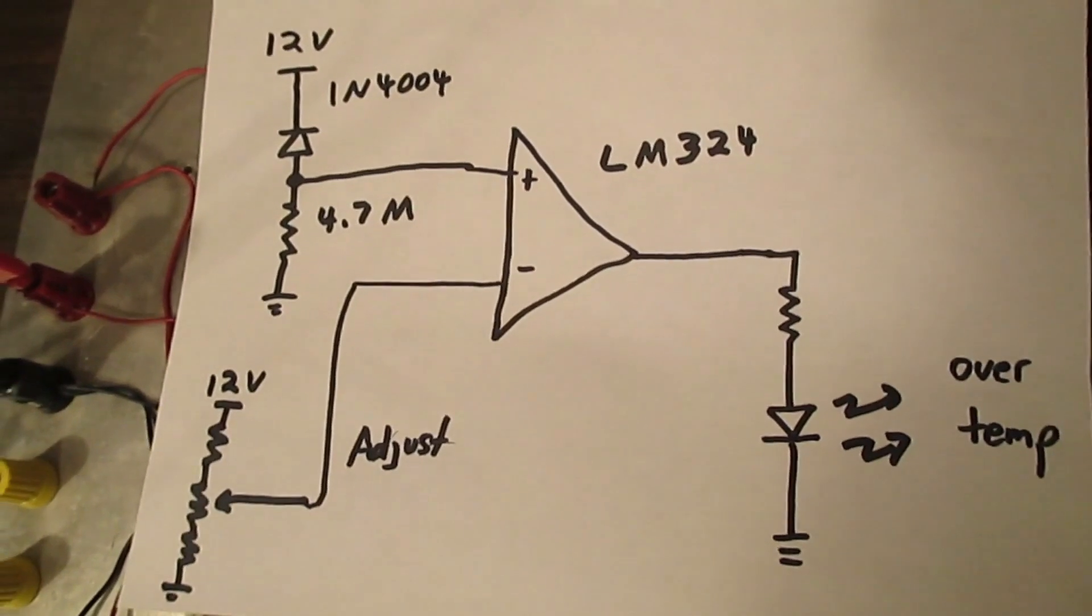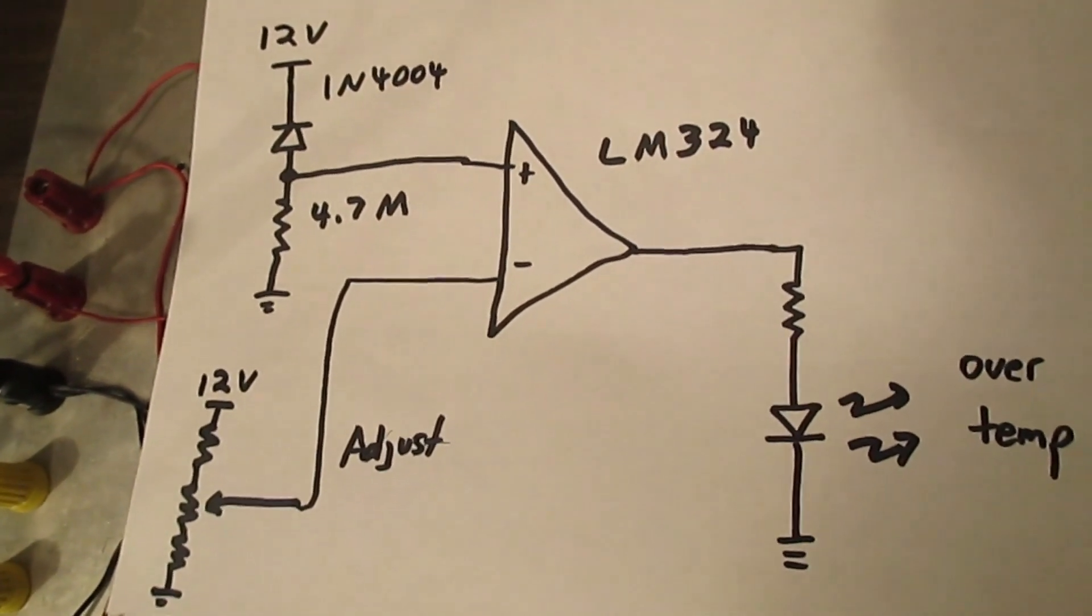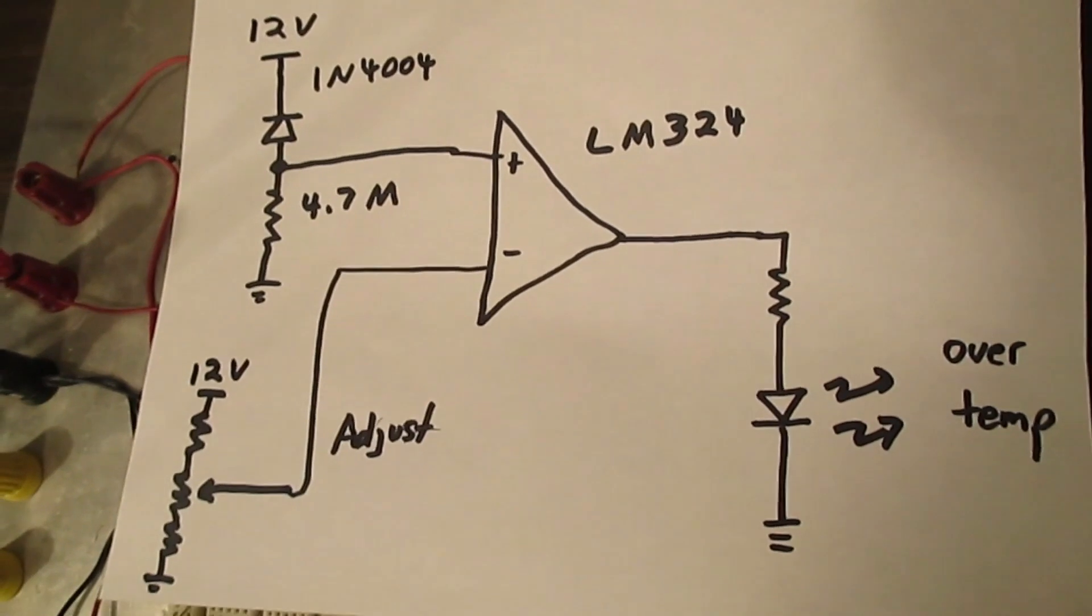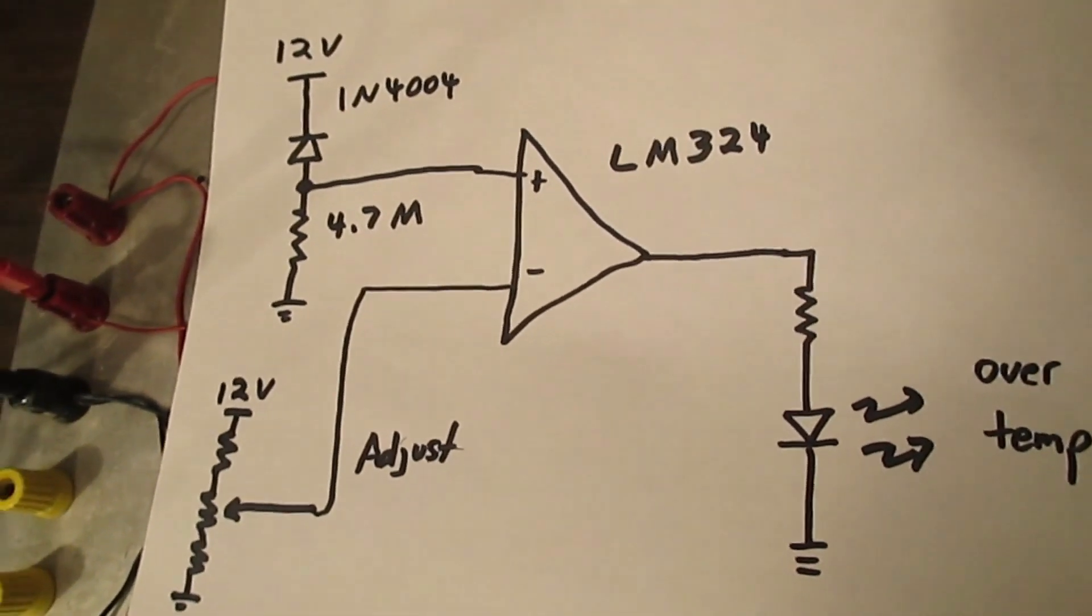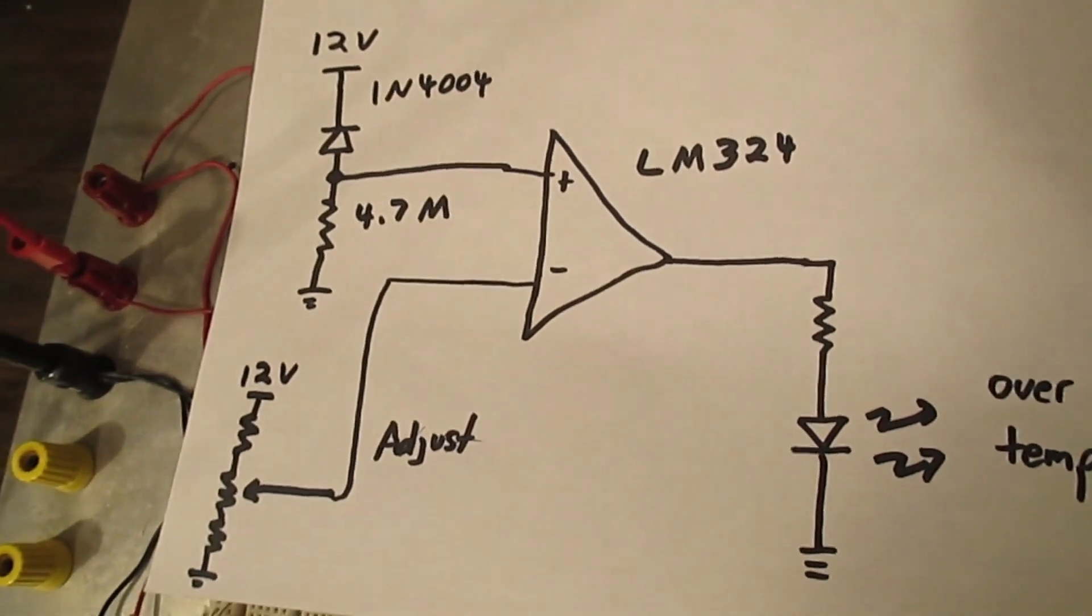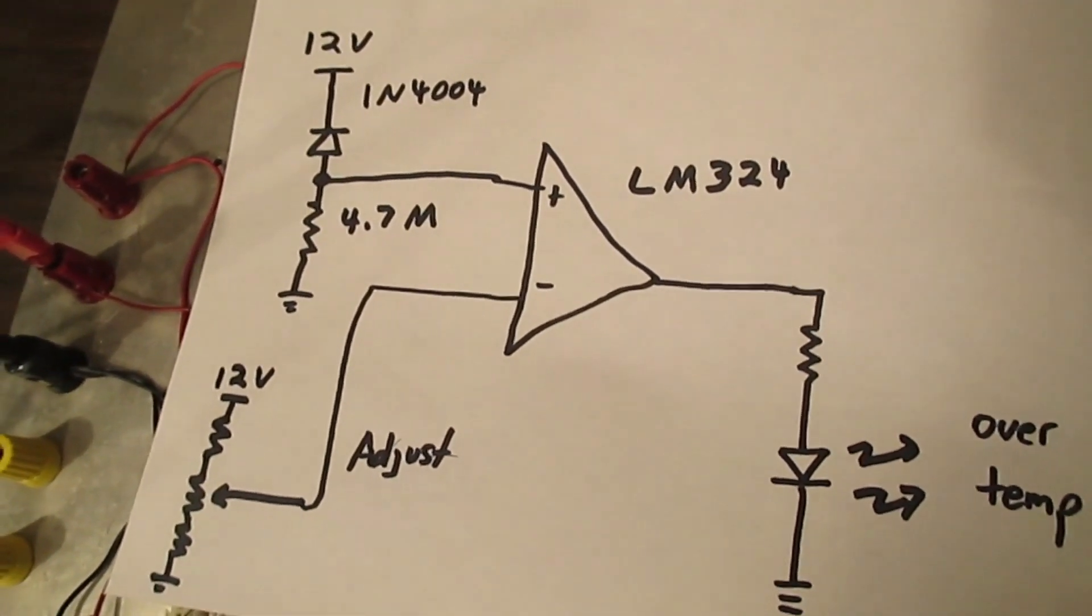The circuit we're going to use is very simple. We're using an op-amp as a comparator. The reverse biased diode goes to a resistor which will have a voltage drop across it proportional to the current.